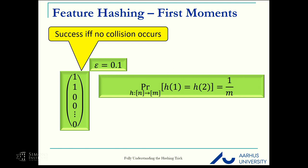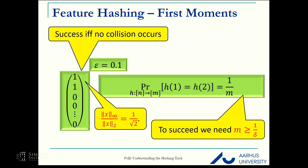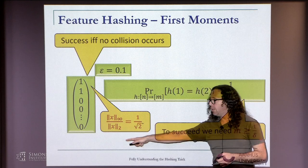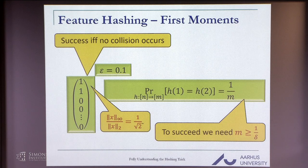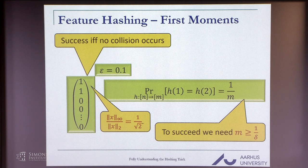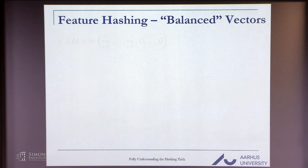This is the best we can do if we want to guarantee something for all vectors. If we hash this vector to m buckets, what is the probability that we maintain the norm? It's exactly the probability that there is no collision. This probability is 1 over m. If we want no collision with probability at least 1 minus delta, we need m to be at least 1 over delta. We cannot escape that.